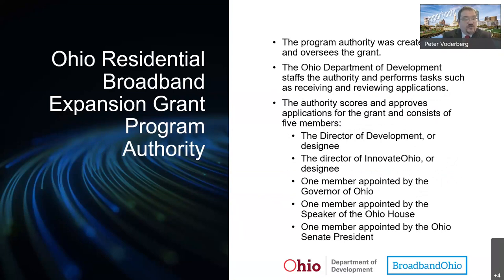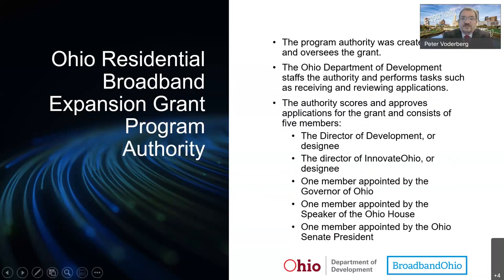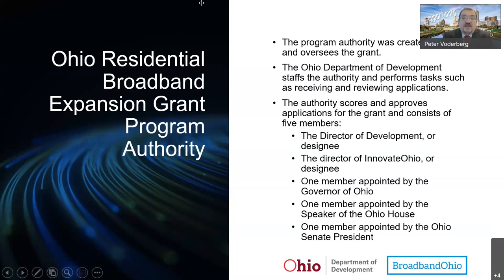The program authority was created by House Bill 2 and oversees the grant. The Ohio Department of Development staffs the authority and performs tasks such as receiving and reviewing applications. The authority scores and approves applications and consists of 5 members: the Director of Development or their designee, the Director of Innovate Ohio or their designee, one member appointed by the Speaker of the Ohio House, and one member appointed by the Ohio Senate President.